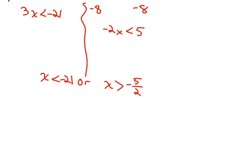If I put these two answers on a number line and compare the inequalities, negative 21 would be somewhere over here. Negative 5 halves — that's negative 2 and a half — so that would be over here to the right. The first inequality x is less than negative 21. Because that's exclusive, I put an empty circle at negative 21, and shade to the left.